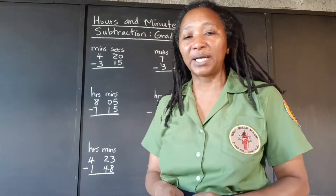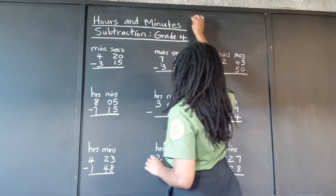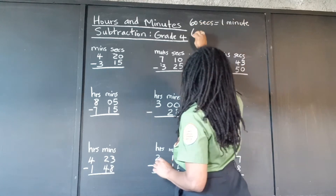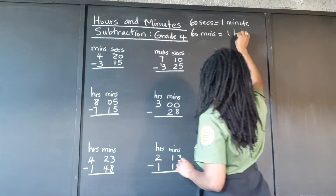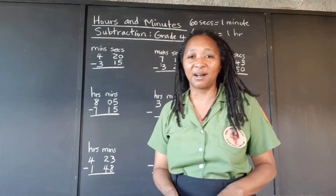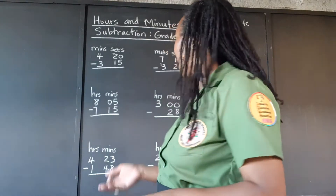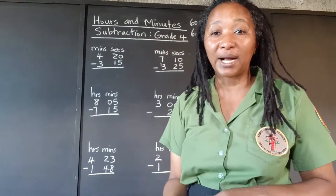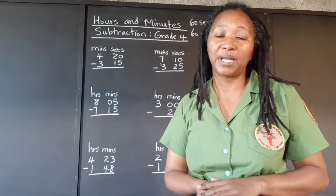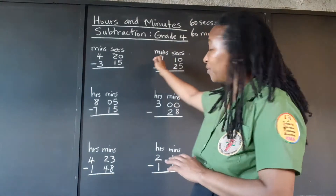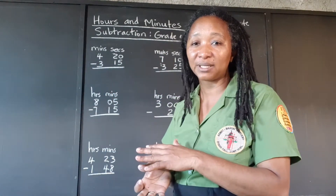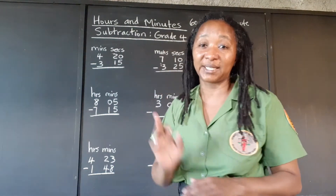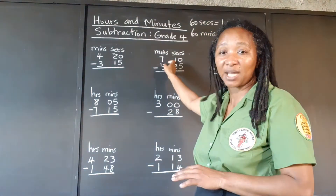The basic principle in subtracting minutes and seconds: 60 seconds give 1 minute, 60 minutes give 1 hour. So, if we're subtracting seconds and we find out that we don't have enough seconds at the top to subtract the one at the bottom, we can go over to the next place value and take 1 out. However, we don't carry it as 1 — if we're taking 1 minute, we have to carry it as 60 seconds and add it to the seconds that were there already, then subtract.